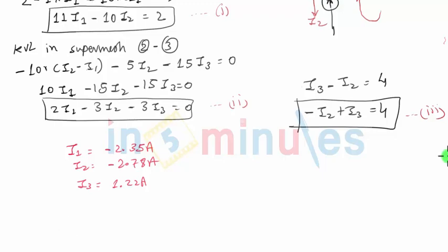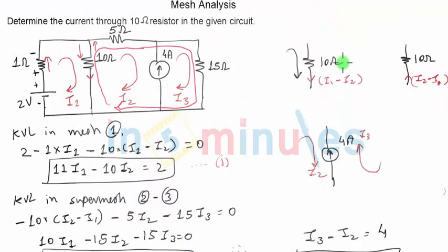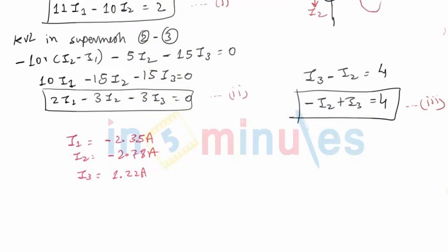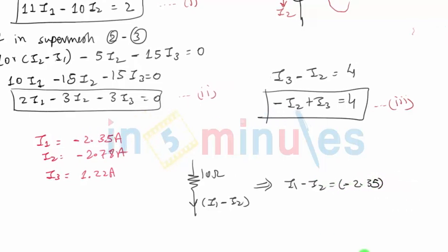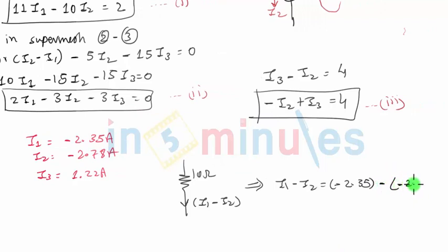The question was to find the current through the 10-ohm resistor. Current through the 10-ohm resistor in the downward direction is I1 minus I2, and in the upward direction is I2 minus I1. Since no direction is specified, I'll assume downward direction. So the current is I1 minus I2, which equals minus 2.35 minus (minus 2.78), giving us 0.43 amperes. Since the result is positive, the actual current through the 10-ohm resistor flows in the downward direction at 0.43 amperes.